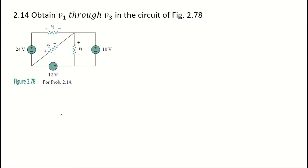Problem 2.14: Obtain V1 through V3 in the circuit of figure 2.78. First, let's assume the direction of voltage drop from positive to negative. Next, assume the direction of voltage supply from negative to positive. Then we will create loops: loop 1, loop 2, and loop 3.